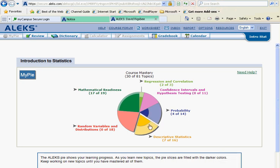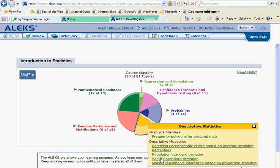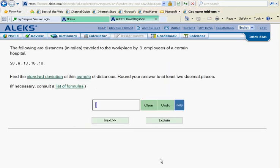Continuing on Yellow Slice, we'll be looking at sample standard deviation. The following are distances in miles traveled to the workplace by five employees of a certain hospital. Find the standard deviation of this sample of distances.